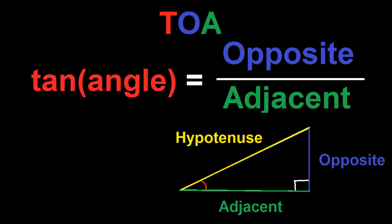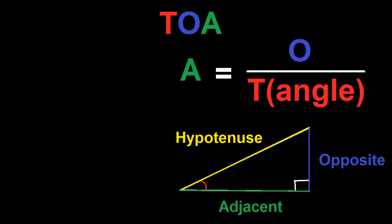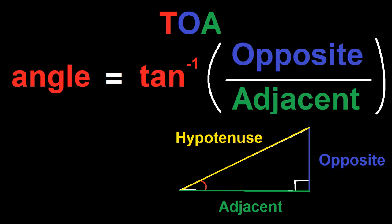So rearranging the formulas, you can solve for any variable. If you want to solve for opposite, you just times the adjacent times the tangent of the angle. I just did basic algebra to get this. And if you want to get adjacent, you just do opposite over the tangent of the angle. And if you want to get the value of the angle, you have to do the inverse tangent of opposite over adjacent.